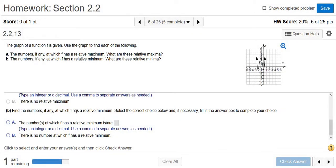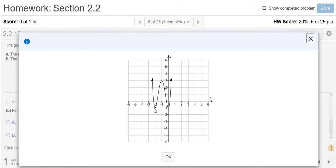Then it says, find the numbers, if any, at which f has a relative minimum. Okay? So let me go back to the graph. So we know the minimums are negative 1, those are the smallest y values. So the numbers where we have minimums are negative 2 and 0.